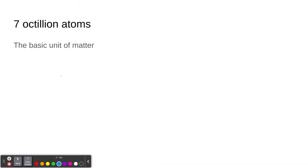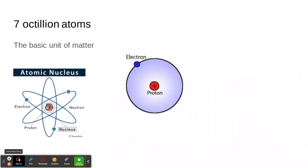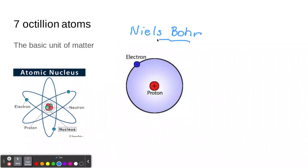Seven octillion: seven thousand, seven million, seven billion, seven trillion, quadrillion, quintillion, sextillion, septillion, octillion — that's how many atoms are inside us. Now, atoms do not actually look like the diagram shown. This is just a teaching tool called the Niels Bohr model. Niels Bohr was a scientist, and this is just a model of an atom.